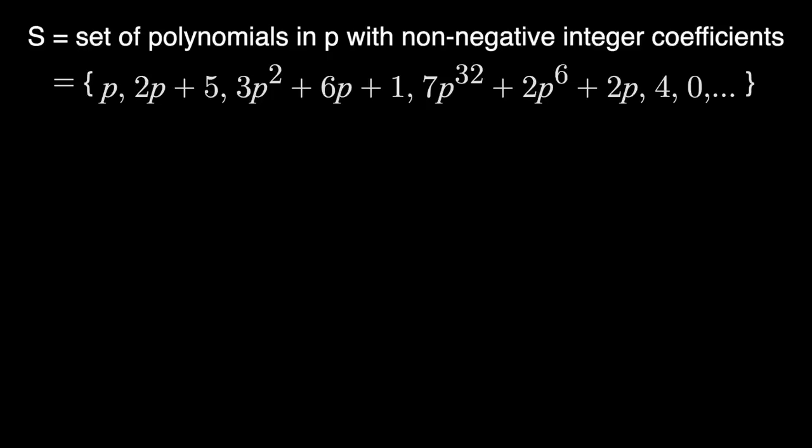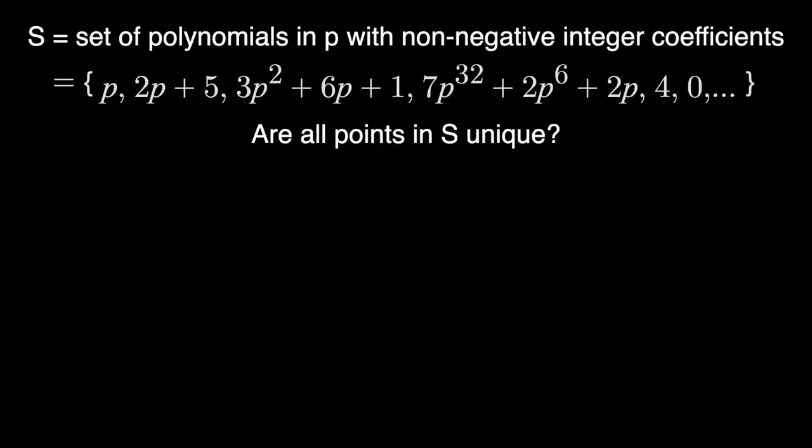Now, here's a question. Are these points all going to be unique? Because that's important for when we split S into A and B. Is it possible that two or more points which are in S and seem different are actually the same point? Well, e to the i is transcendental, meaning it is not the root of any polynomial with finite degree that has integer coefficients. That's actually all we need to know that all the points in S are, in fact, unique.